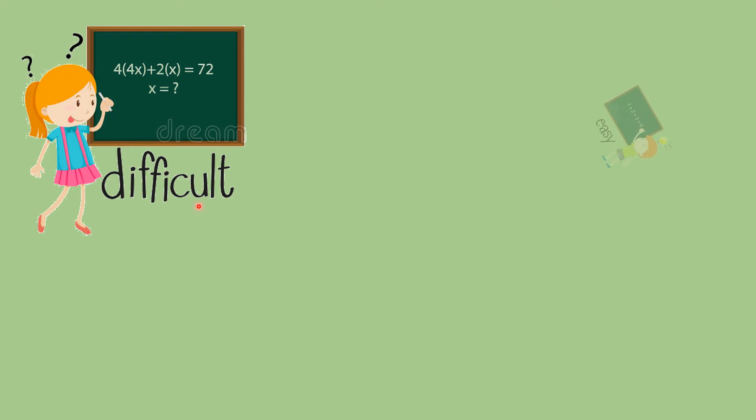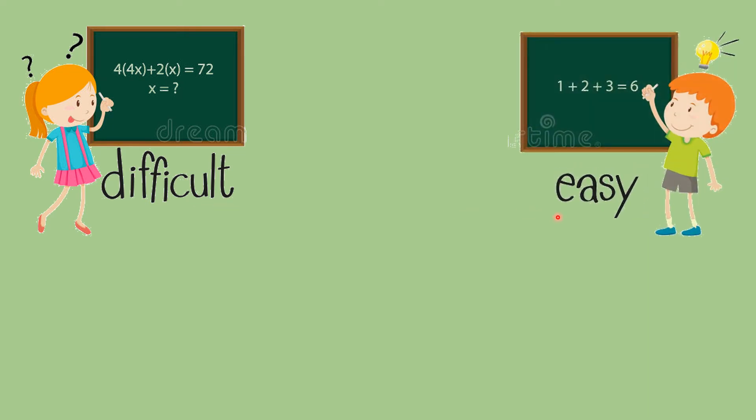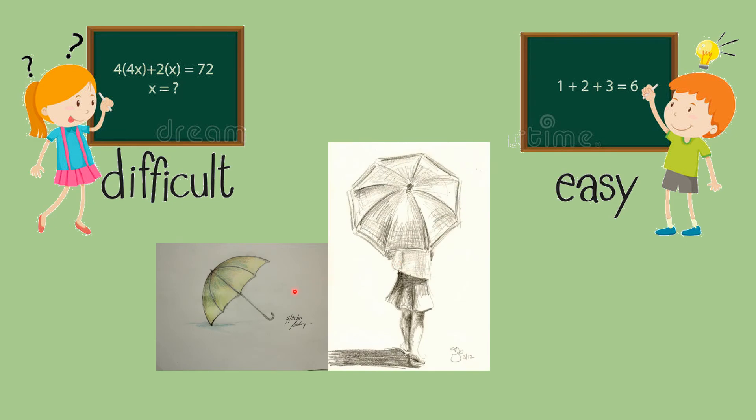Difficult. Easy. This sum is difficult. This sum is easy. This is an easy drawing. This is a difficult drawing.